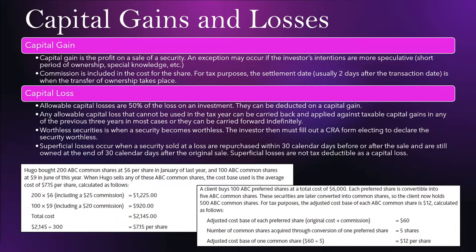A capital gain is the profit on a sale of a security. An exception may occur if the investor's intentions are more speculative — a short period of ownership or special knowledge may trigger an exception by the CRA. Generally it is the profit on a sale, and commission is included in the cost for the share. For tax purposes, the settlement date — usually two days after the transaction date — is when the transfer of ownership takes place. If there is a commission on a purchase, it is included in the cost base, so the capital gain will be a bit less.